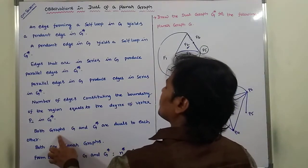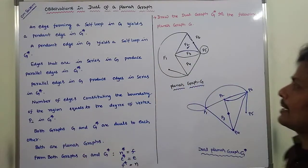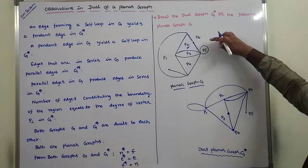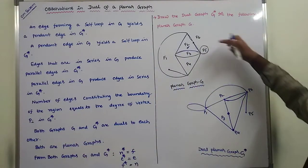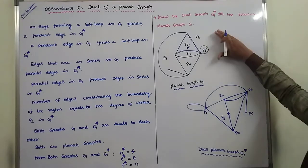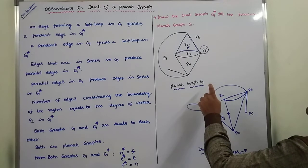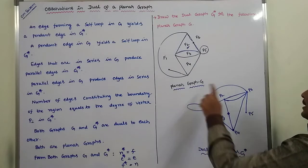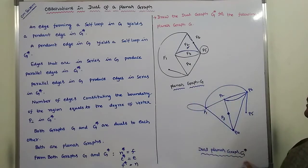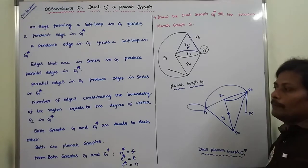Sixth point: both graphs G and G star are duals of each other. For graph G, its dual is G star; for graph G star, its dual is G. Hence, G and G star are duals of each other.